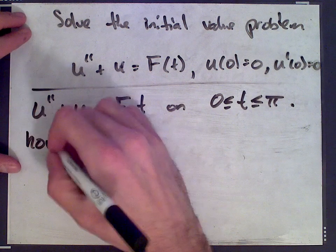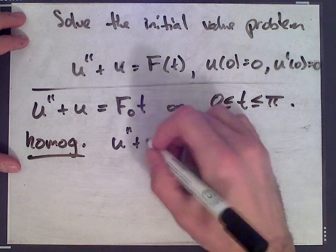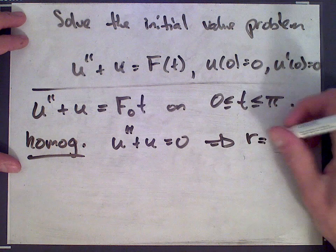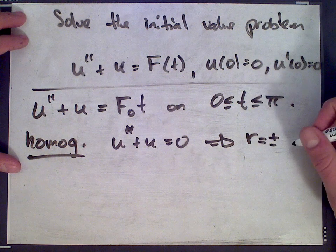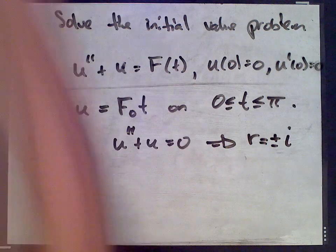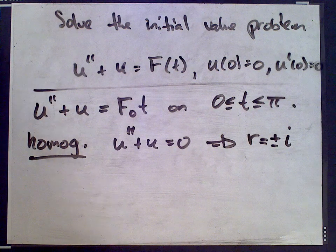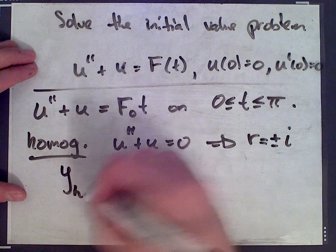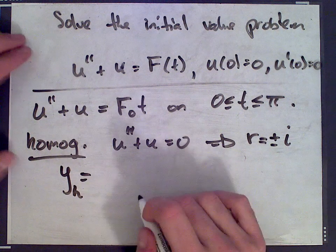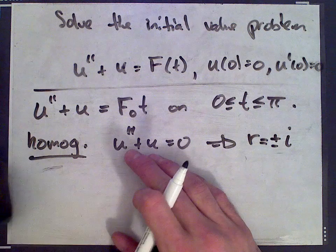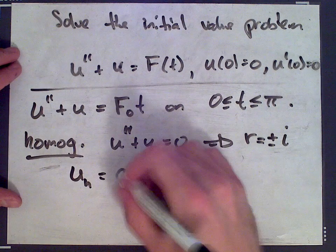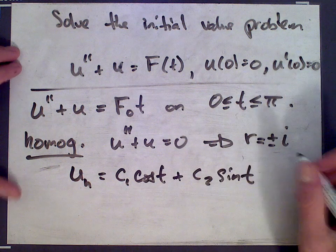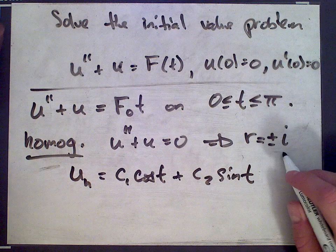The homogeneous equation has roots r equals plus or minus i, which means the homogeneous solution is u homogeneous equals c₁ cos t plus c₂ sin t. That's it, because we got the roots as plus or minus i.